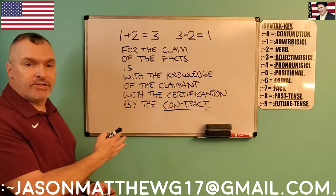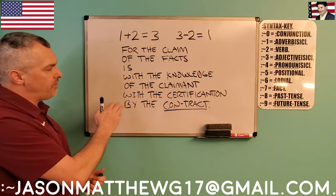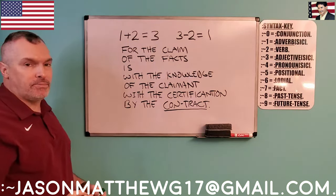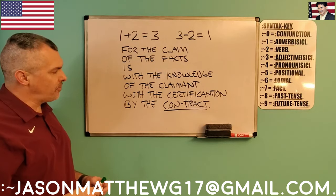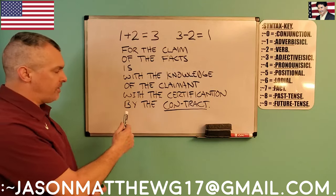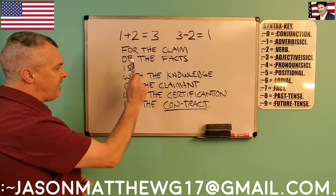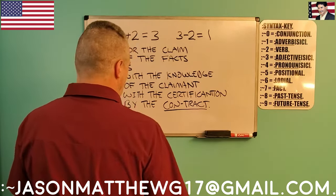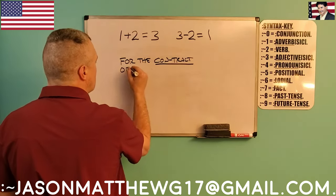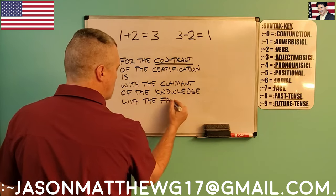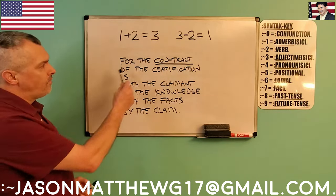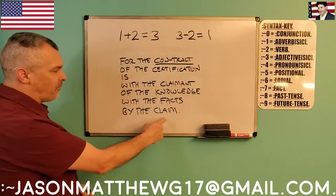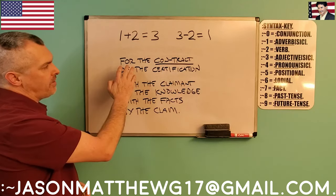Here I've made a longer sentence: 'For the claim of the facts is with the knowledge of the claimant with the certification by the contract.' Backwards, how would that look? Now we have one, two, three, four, five, six positional audio fact phrases. Read backwards it would say: 'For the contract of the certification is with the claimant of the knowledge with the facts by the claim.' And that's exactly how it works — the original sentence forwards was: 'For the claim of the facts is with the knowledge of the claimant with the certification by the contract.'